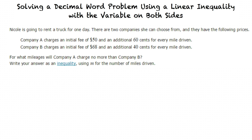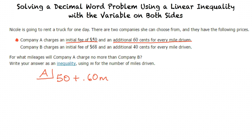We might look at this and be somewhat frightened at all these words, but let's break it apart. Let's first make a mathematical expression for the charge of the truck from Company A. Our initial fee is $50, and there is an additional $0.60 cost for every mile driven. Using M as a variable, the expression is 50 plus 0.60M, because it starts at $50, then there is an addition of $0.60 multiplied by every mile. Yes, that is exactly right — that's our charge for Company A.